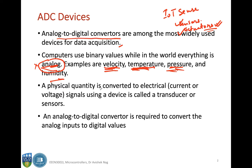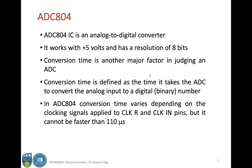Physical quantity is converted to electrical signals using a device called a transducer or sensor, and then the analog to digital converter is required to convert the analog inputs to digital values. A typical ADC chip is the ADC 804 and we will study about it now.